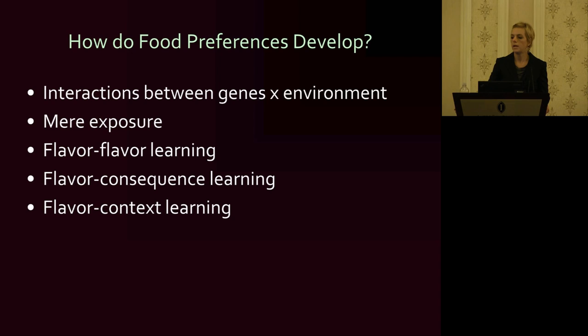From work that Leanne Burch, Tony Sclafani, and many other people have done, we have a pretty good idea how food preferences develop in children. We know that these are not innate. Although there are innate aspects of food preferences impacted by genes, overwhelmingly food preferences develop through many other complex phenotypes. There are interactions between genes and the environment, and there are processes by which food preferences are learned. The process of familiarity or mere exposure with food cues can increase food preferences over time.